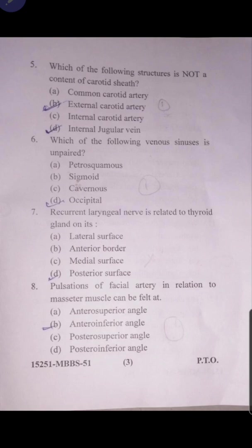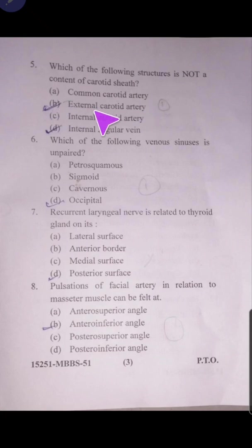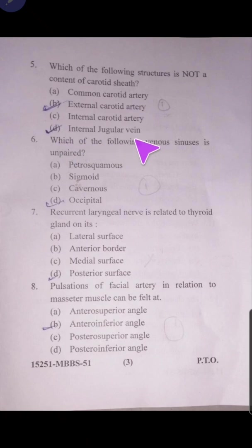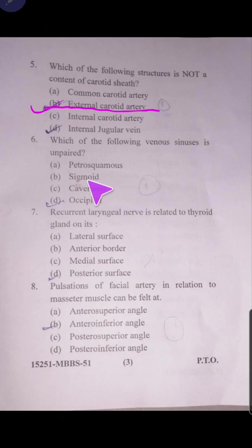Question number five: which of the following is not a content of the carotid sheath — common carotid artery, external carotid artery, internal carotid artery, or internal jugular vein? The answer is external carotid artery.